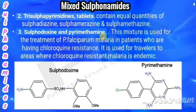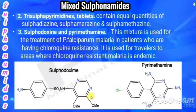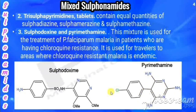Next is sulfadoxine combined with pyrimethamine. This combination is used for the treatment of Plasmodium falciparum malaria in patients with chloroquine resistance, and for travelers to areas where chloroquine-resistant malaria is endemic. Sulfadoxine has a sulfonamide group with a pyrimidine bearing two methoxy groups. Pyrimethamine has a chlorophenyl group with a triamino-pyrimidine attached. Together, this combination treats chloroquine-resistant P. falciparum malaria.